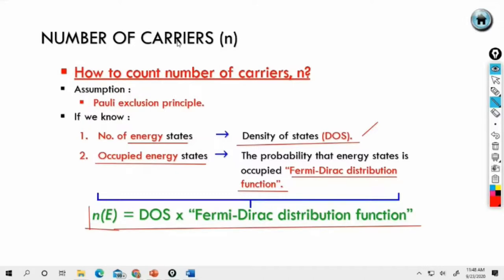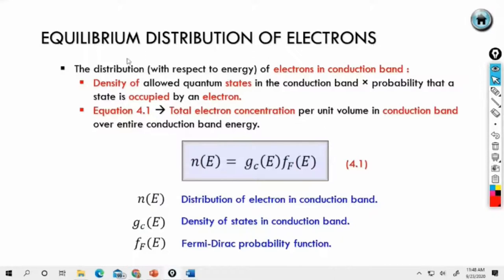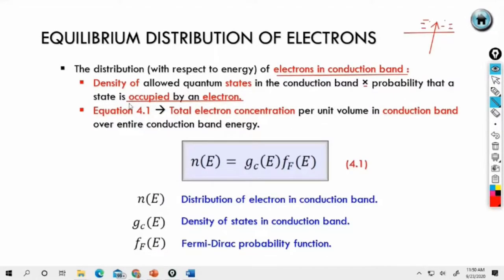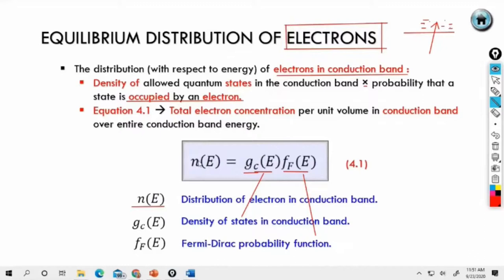Number of carriers N equals Fermi-Dirac multiplied by DOS — this is the number of carriers in the conduction band. For the equilibrium distribution of electrons in the conduction band, you multiply the density of allowed quantum states in the conduction band (GC) by the Fermi-Dirac probability F(E) that a state is occupied by an electron. Equation 4.1: total electron concentration per unit volume in the conduction band over the entire conduction band energy — using GC for DOS and F(E) for the Fermi-Dirac distribution. For electrons, we use the term N.